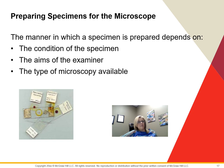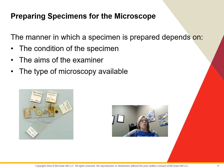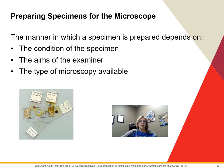Before looking at a specimen under the microscope, we have to prepare it. We mount it on a glass slide that sits on the stage between the condenser and the objective, under the stage clips. How it is prepared depends on three things: the condition of the specimen (alive or dead), the goal of the examiner (overall structure, identification, or movement), and what type of microscopy is available — bright field, dark field, phase contrast, or fluorescence.